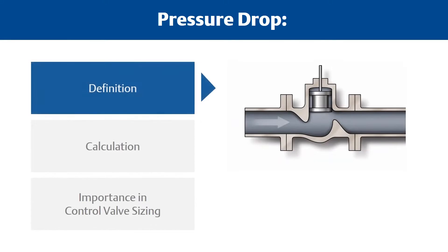Pressure drop is the difference in pressure as measured between two points in a pipe with flowing fluid. For a control valve, the pressure drop is the difference between the inlet pressure and the outlet pressure. It varies with flow.